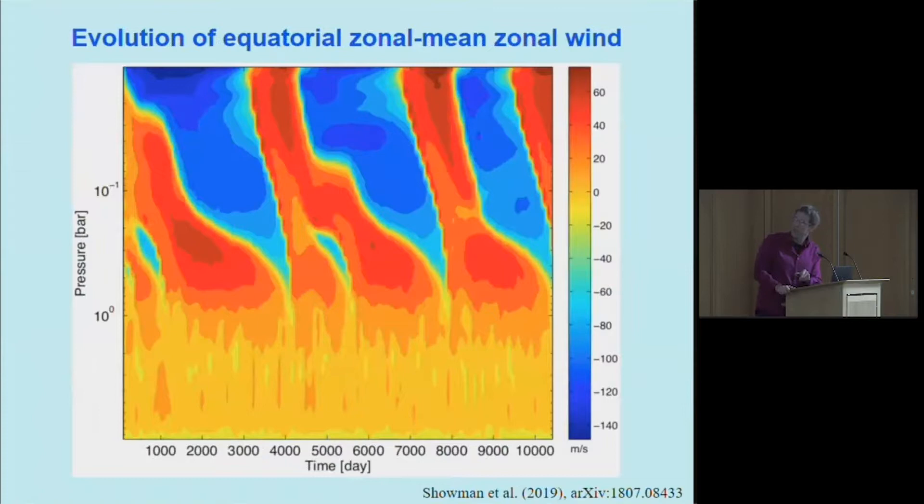This is my version of that plot that I showed from the observations for the QBO. Here's the zonal average east-west wind at the equator, showing the eastward wind in red and the westward wind in blue. You can see this downward propagation of the jets like I described, in this case with a period of about 4,000 days or so. This is the first time that this kind of oscillatory structure has been simulated in a three-dimensional model of a giant planet.